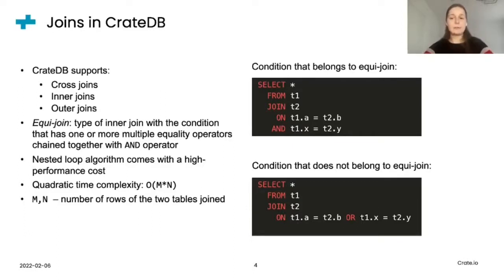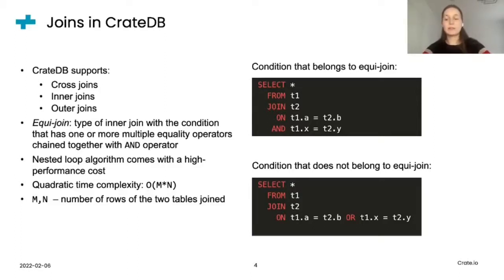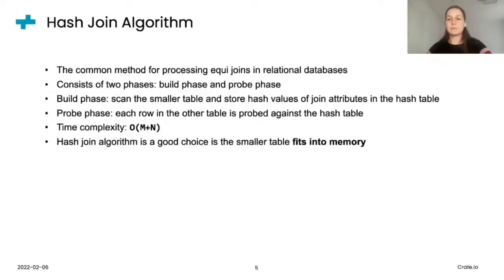The initial implementation of equijoin, as already suggested, was a nested loop algorithm. This algorithm is simple and relatively easy to implement, but it comes with a very high performance cost. The time complexity of a nested loop algorithm is quadratic with respect to the number of rows of the two tables involved in the join. So if we talk about large datasets, as quite common in CrateDB, this can be a very expensive operation. And we chose to optimize equijoin performance with the hash join algorithm, which is a common method for implementing equijoin in relational databases.